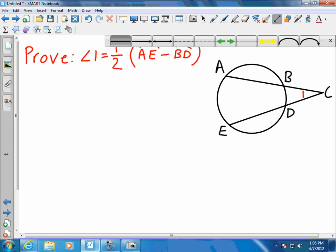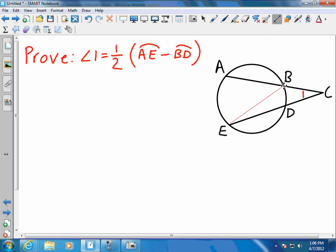Let's begin by connecting B to E. What this is going to do is give us two inscribed angles, ABE and also inscribed angle BED, whose intercepted arcs are arc AE and arc BD,